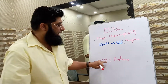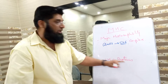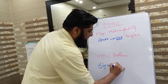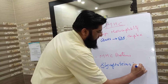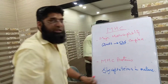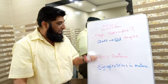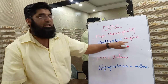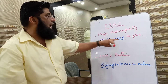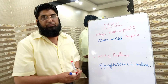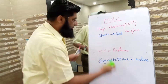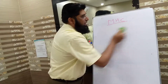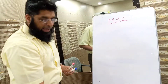Major Histocompatibility proteins — what are these proteins? These are glycoproteins in nature. These proteins are encoded by MHC complex genes, and these genes are located on chromosome number 6. Now you can perceive the difference between MHC complex and MHC proteins.